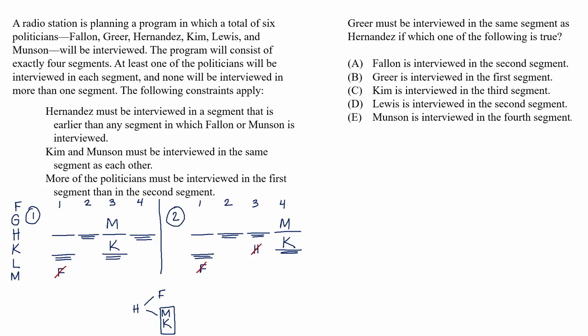The question asks, Greer must be interviewed in the same segment as Hernandez if which one of the following is true? Basically, this question is asking us, what condition would force Greer and Hernandez to be paired up in the same segment?